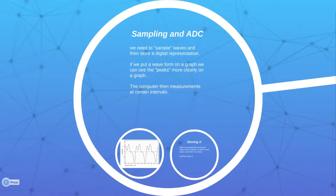Now sampling and audio to digital converter. Because computers have to process things digitally, we need to convert that analog thing into a digital thing. What we do is we need to sample the waves and then store a digital representation of it. We can put it into a graph form and then we can see the peaks and the drops and everything in the graph. The computer basically measures it at certain intervals.